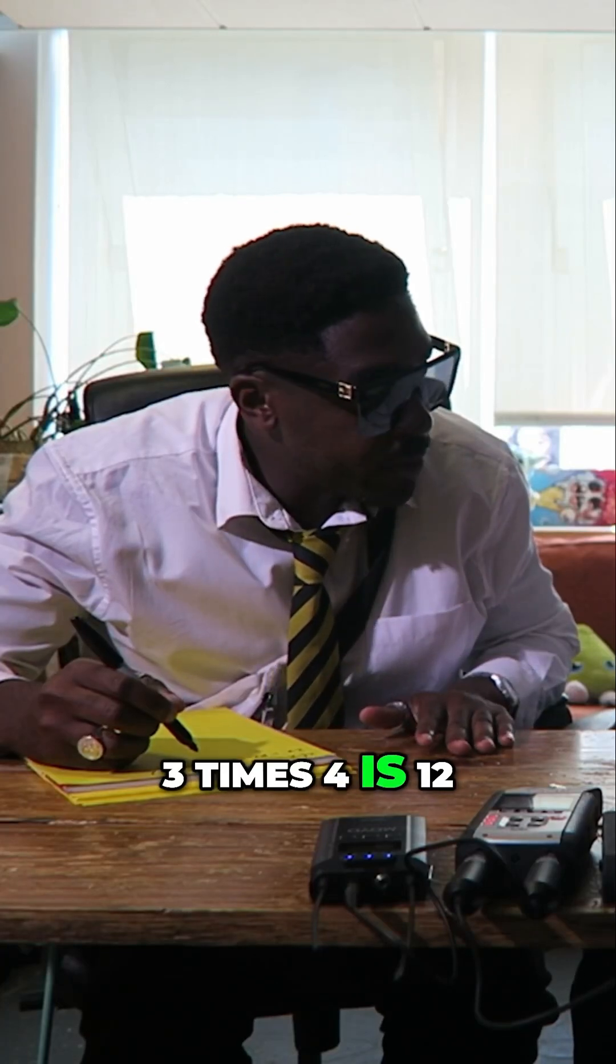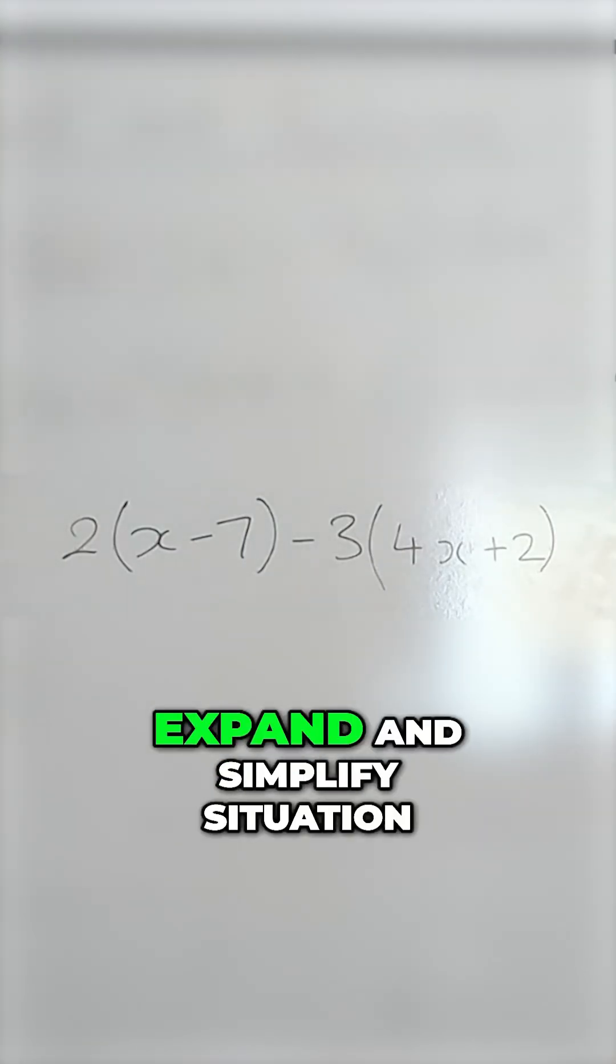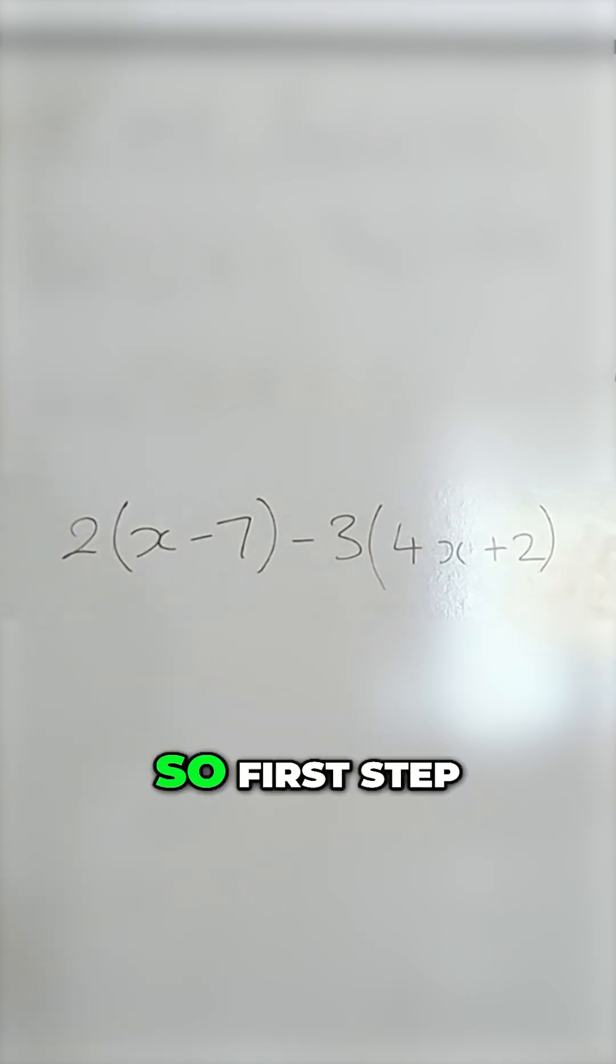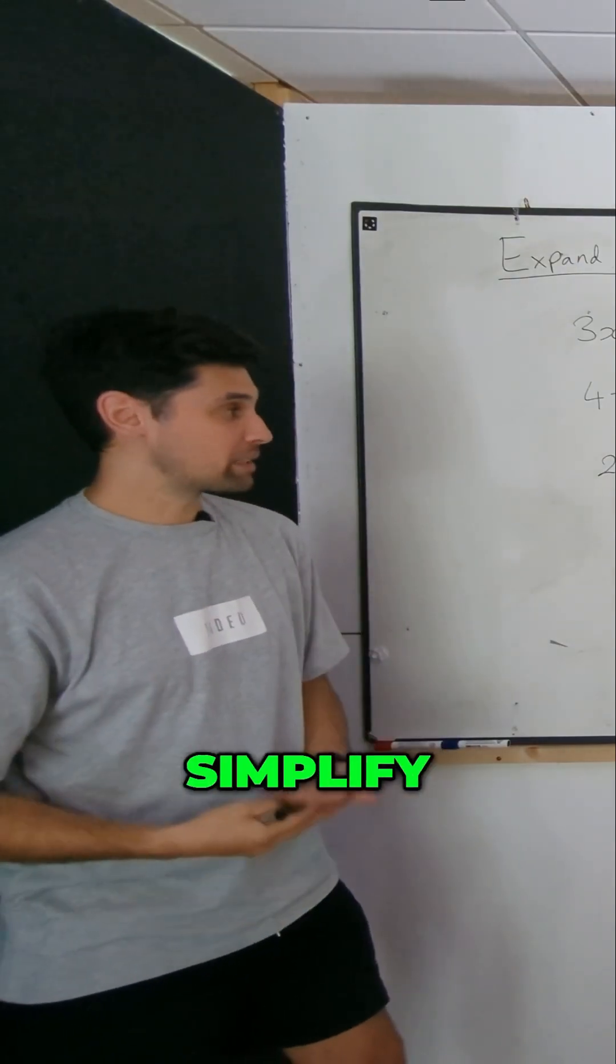Three times four is three times four. So this is an expand and simplify situation. So first step, expand the brackets. Second step, simplify.